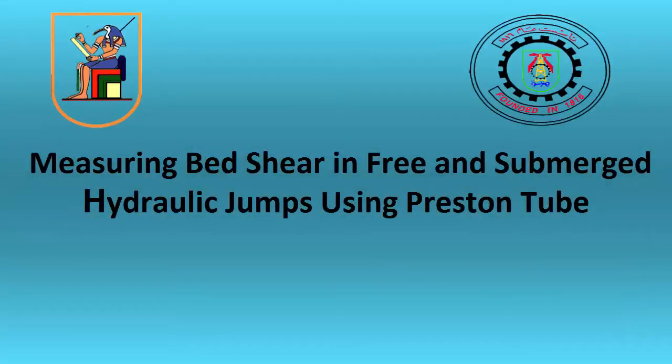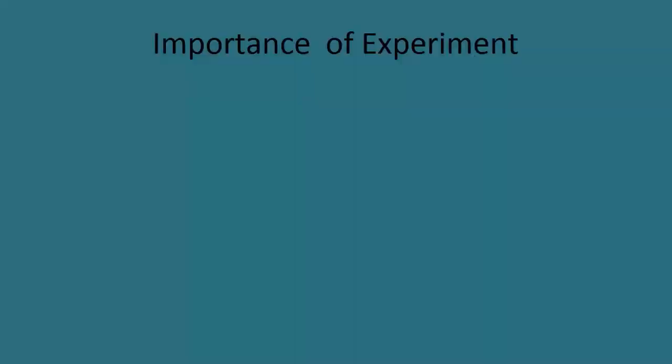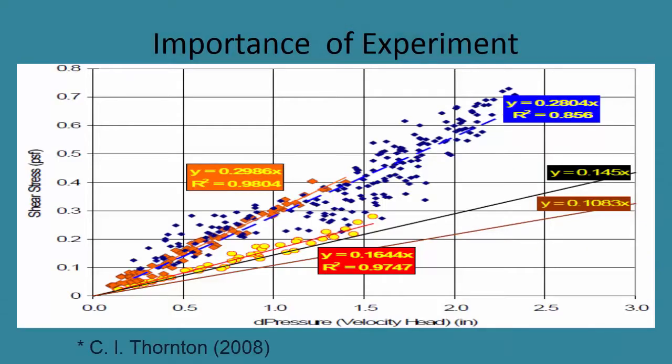In this video, we will illustrate how to measure bed shear in free and submerged hydraulic jumps using a Preston tube. It will be very useful because by the end of this experiment, we will have a graph by which we can know bed shear directly by measuring only one parameter, which is Froude number or velocity head.